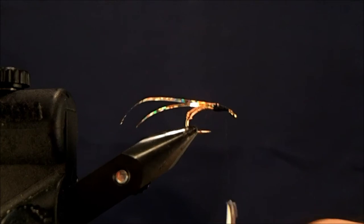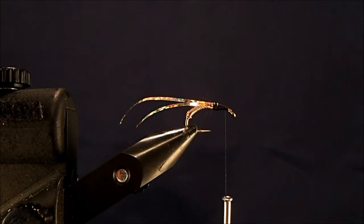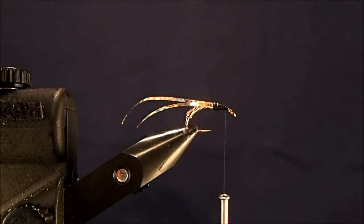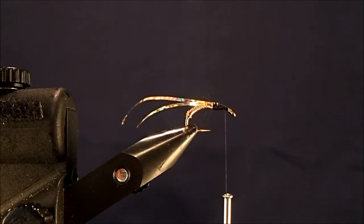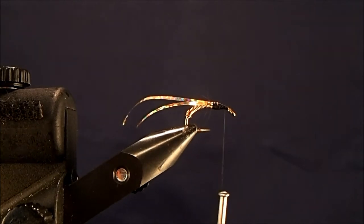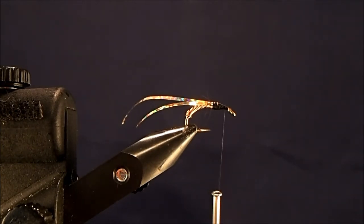Now to save yourself some thread, you can tie the rest on with thread that you have, or I'm going to tie in a couple of strands of floss. This is just going to help me build up that thorax more quickly and save me some thread. So I'm going to take three strands of floss here.